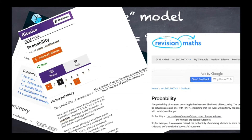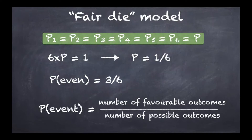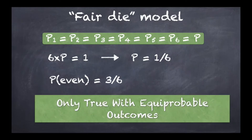The issue is that this formula can be confused with the definition of probability. Because we've seen it only works in the fair die model — where all outcomes have the same probability — it follows that this equation is only true with equiprobable outcomes. So it cannot serve as a general definition of probability or even a practical formula to find probability values.